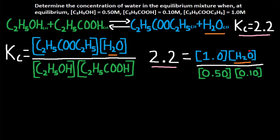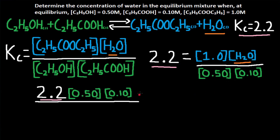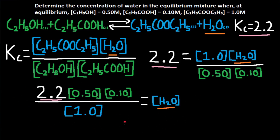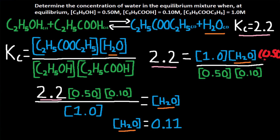To solve for H2O, we isolate it by moving the other numbers diagonally. 0.50 and 0.10 move to multiply 2.2, and 1.0 moves to divide, which won't really change anything. So H2O equals 2.2 multiplied by 0.50 and 0.10, divided by 1. Using your calculator, H2O is equal to 0.11 rounded. Essentially, we multiply both sides of the equation to cancel terms — what we do to one side we must do to the other.